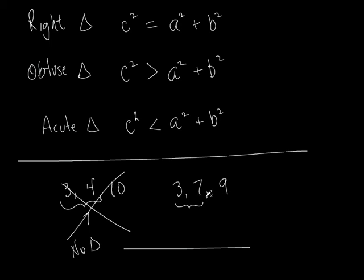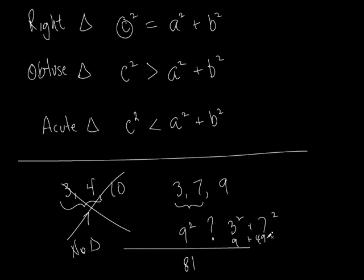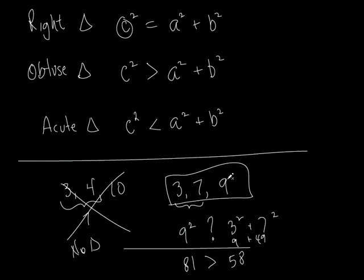But what about three, seven, and nine? Three plus seven is ten, which is bigger than nine, so yes, it is a triangle. Now take the longest side — nine — and square it: eighty-one. Then take three squared plus seven squared: nine plus forty-nine equals fifty-eight. Since eighty-one is greater than fifty-eight, C squared is greater than A squared plus B squared, so this is an obtuse triangle.